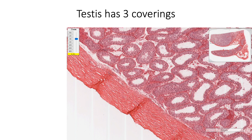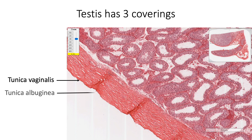The testis is enclosed in a tough capsule having three layers. The outer layer is the tunica vaginalis, a continuation of the processus vaginalis, with a smooth moist layer of mesothelium which is simple squamous epithelium. The middle layer is the tunica albuginea, a dense collagenous sheath that projects inward on the posterior aspect to form an incomplete septum called the mediastinum testis. The innermost layer is the delicate tunica vasculosa, which contains a plexus of blood vessels.